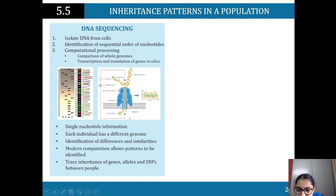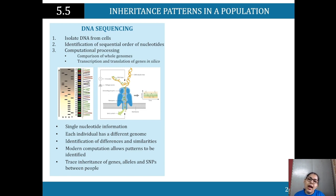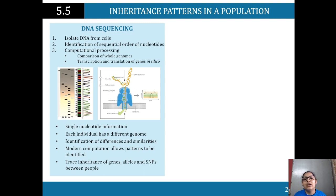Single nucleotide information is found — each individual has a different genome, which is what makes us unique. We then look at identification of differences and similarities. The whole thing may not match due to chance; sometimes two different people can share parts of their DNA. This has been raised as a source of unreliability in this process. Modern computation allows the pattern to be identified, and then we trace inheritance of genes, alleles, and SNPs between people.